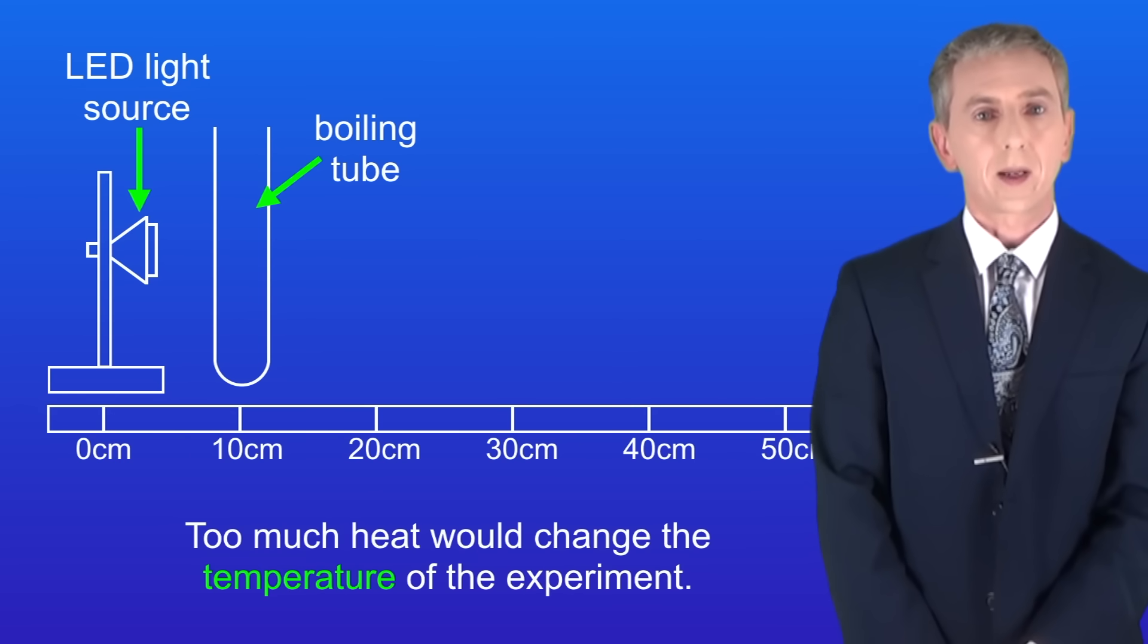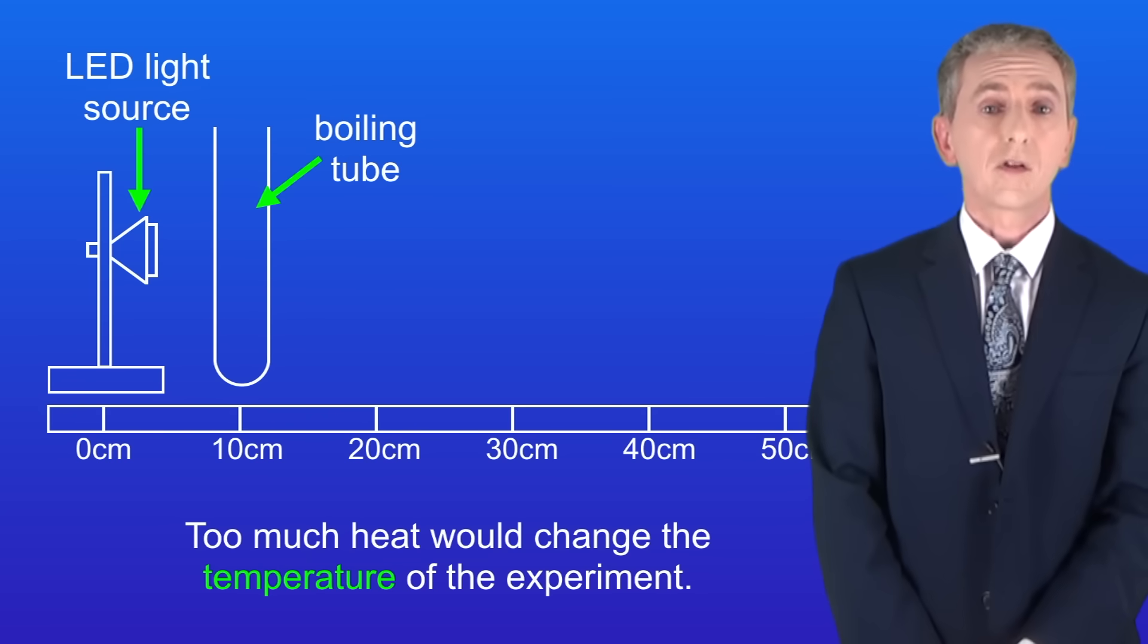If we have to use a normal light bulb then we need to place a beaker of water between the light and the boiling tube. This absorbs the heat produced by the bulb.